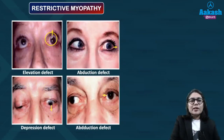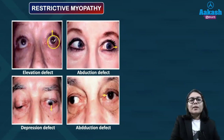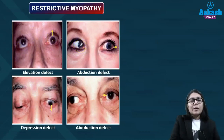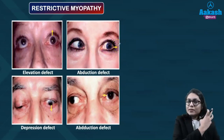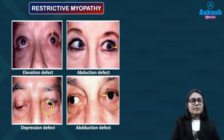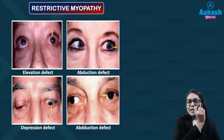Clinical photographs demonstrate the motility deficits: one image shows an elevation defect where one eye moves up but the other cannot; another shows an abduction deficit where the eye cannot move toward the lateral canthus; there is also a depression defect and an adduction defect where the eye is unable to move inward.